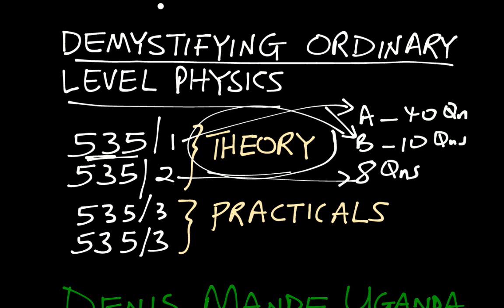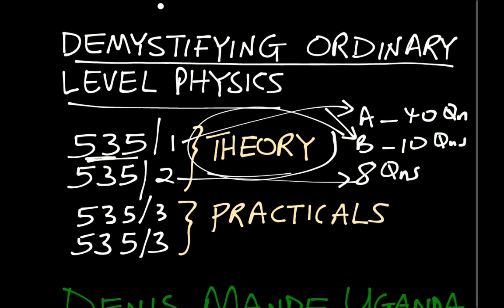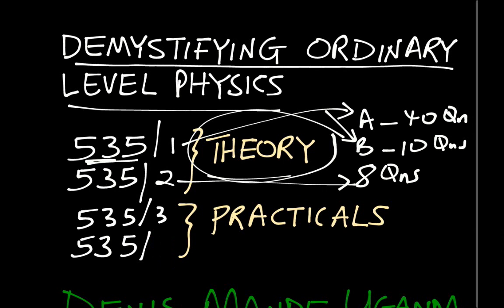Then paper two consists of eight questions which are extracted from the topics of physics as I will explain. In paper three and paper four, the practical papers, they consist of three numbers. You're supposed to do two actually. Number one is compulsory. I'll give you the details of the practical work when we have the time.